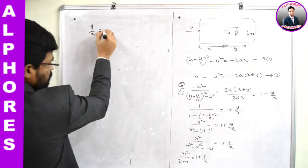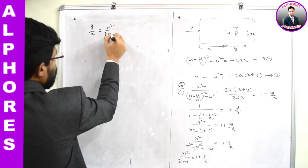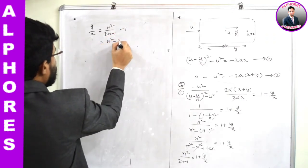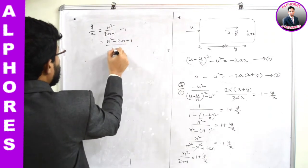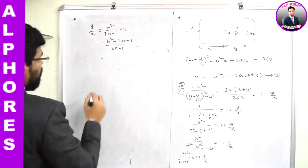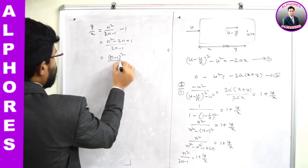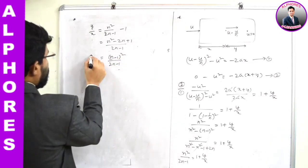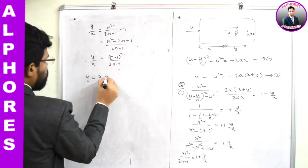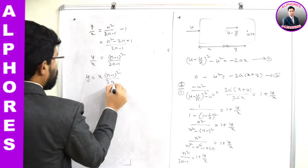So y/x = [n² - (2n - 1)] / (2n - 1) = (n² - 2n + 1) / (2n - 1) = (n - 1)² / (2n - 1). Therefore y = x(n - 1)² / (2n - 1).